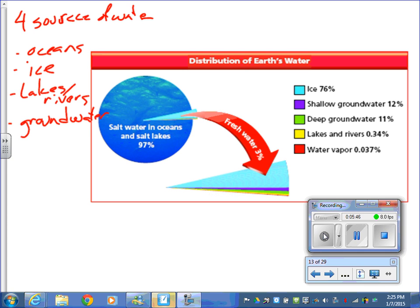So the four major sources of water on earth, places we find water, are oceans, ice, lakes and rivers, and groundwater. And then the second part of that question, which I thought was worded a little bit confusingly, was of these four major sources of water, which ones are salt water? Oceans, only oceans. Oceans and salt lakes.